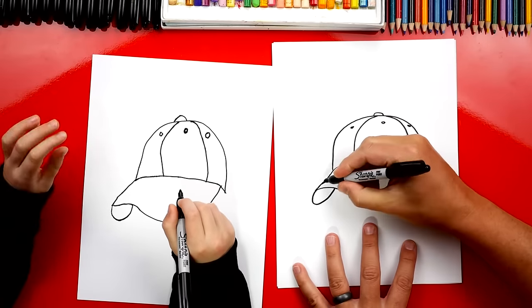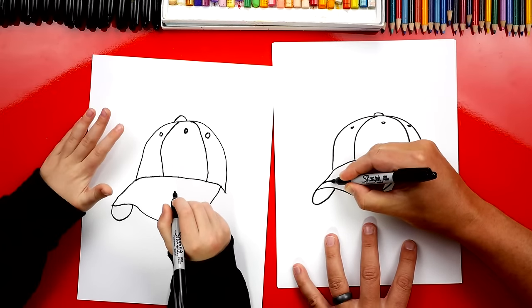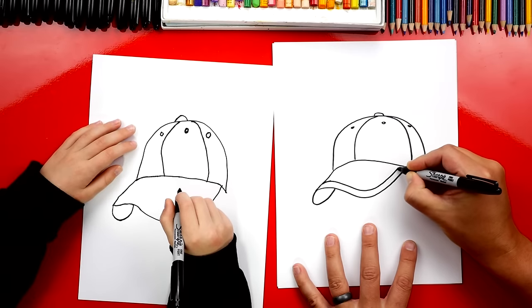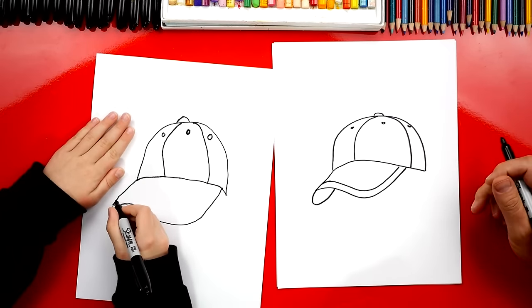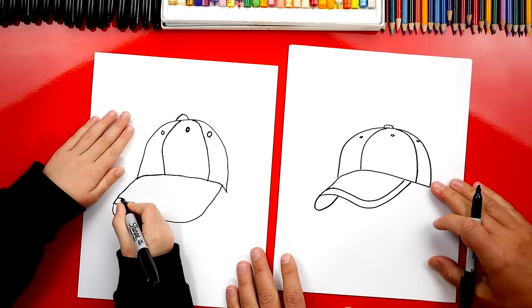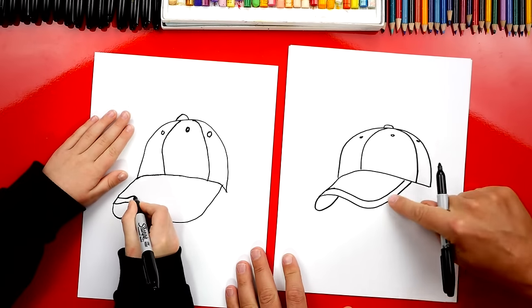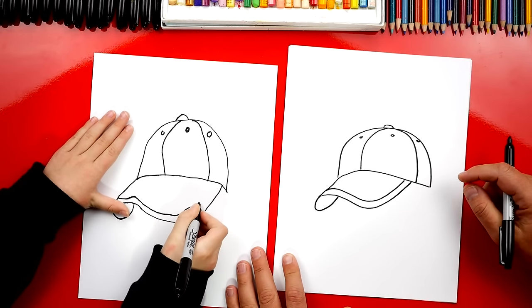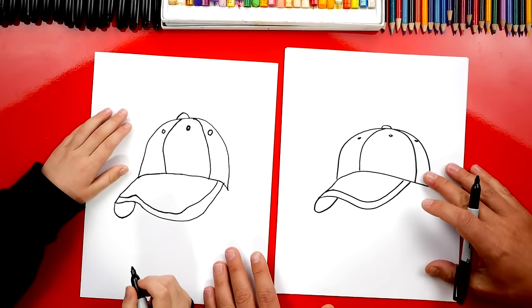Now we're gonna add some more lines to the front of our bill. I'm gonna add a line that matches that first S line that we drew. Look at that. I drew it right next to it. Just match that same line. All right, dude, you did it.